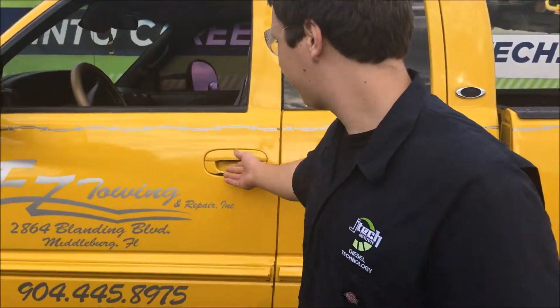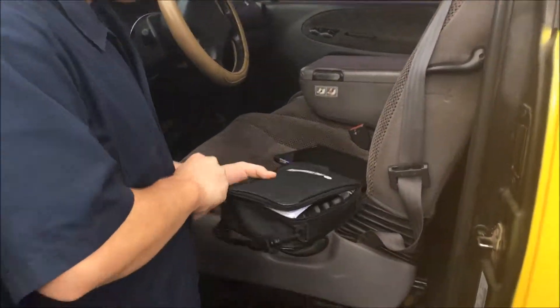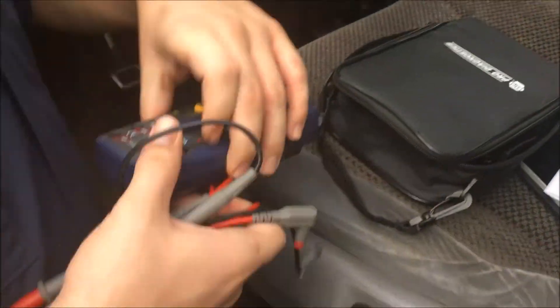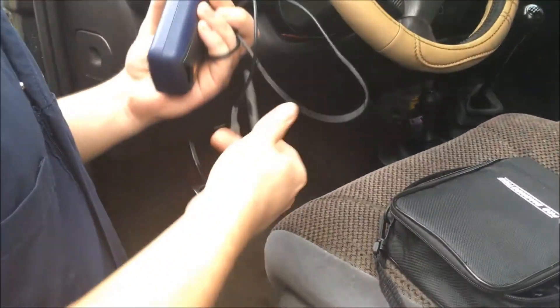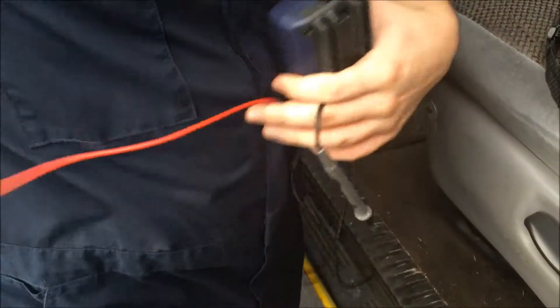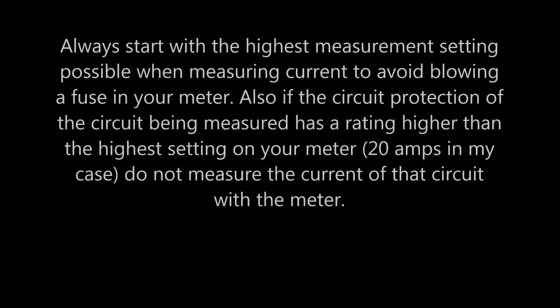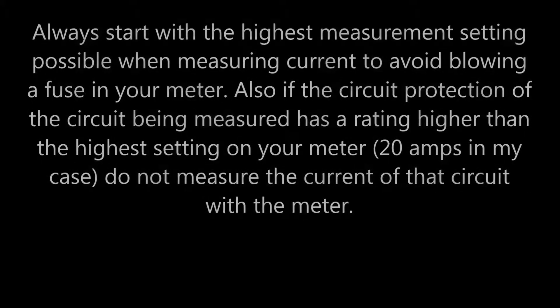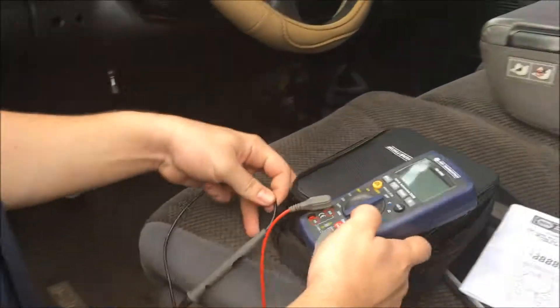Alright guys, today we're going to be checking the amp draw on the power window circuit in this Dodge Ram 3500. We're going to take out the multimeter and plug the leads in — common and 20 amps — and we have that ready.